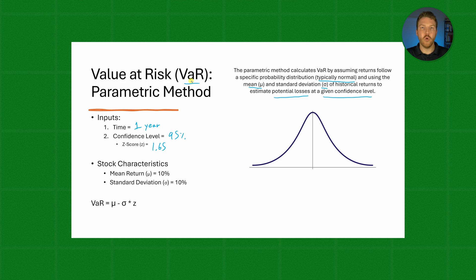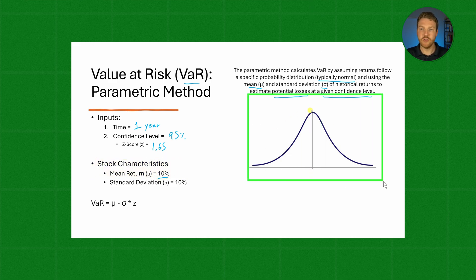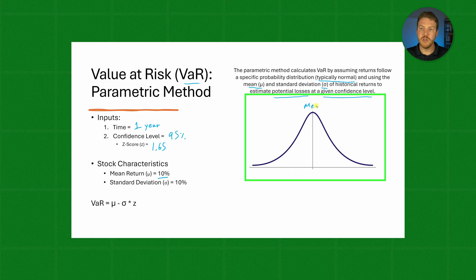VaR is always going to be a one-tailed test because we only are interested in the losses, not the gains. So let's assume that we're looking at a stock with these characteristics. This stock has a mean expected return of 10%. So if we go over to our bell curve distribution over here, our mean, which we expect the stock to perform, is a 10% return for one year.